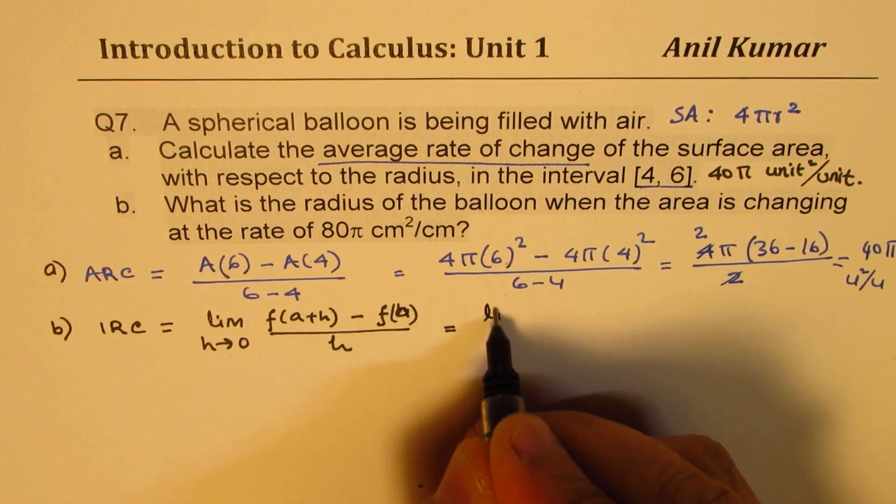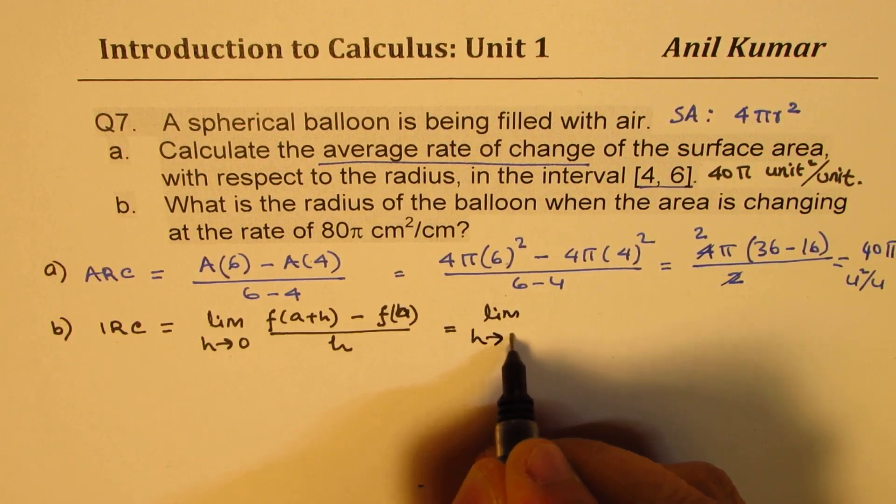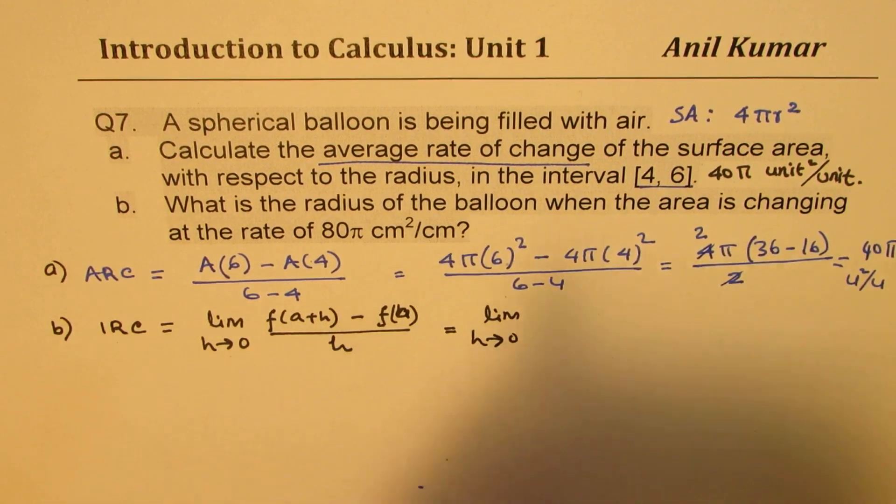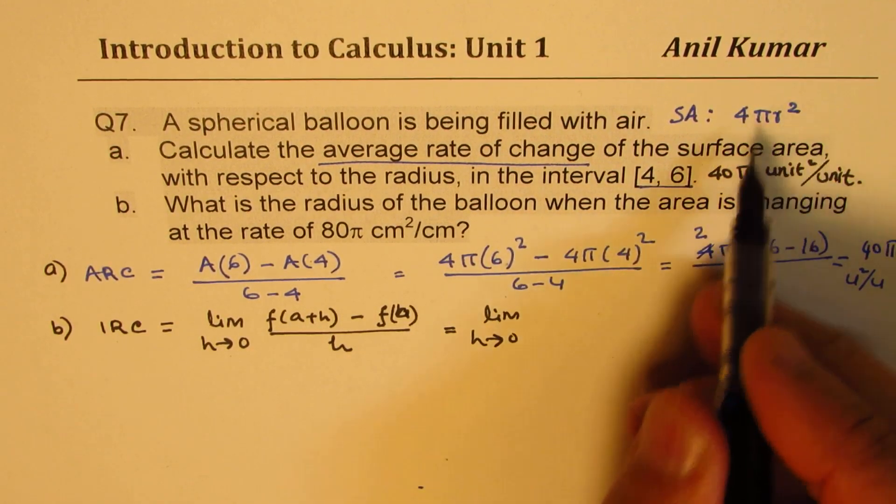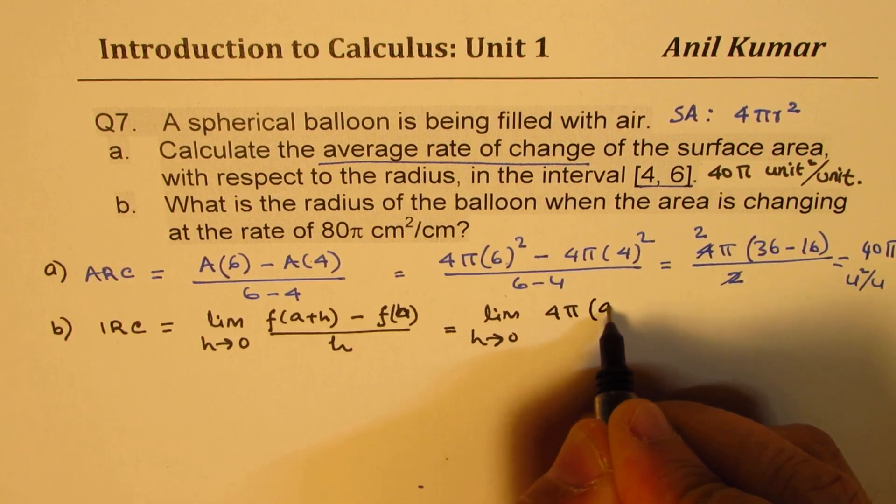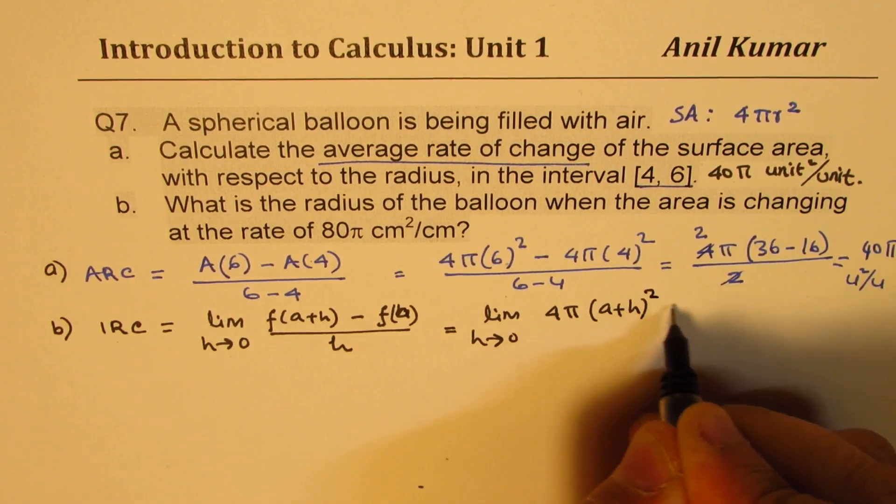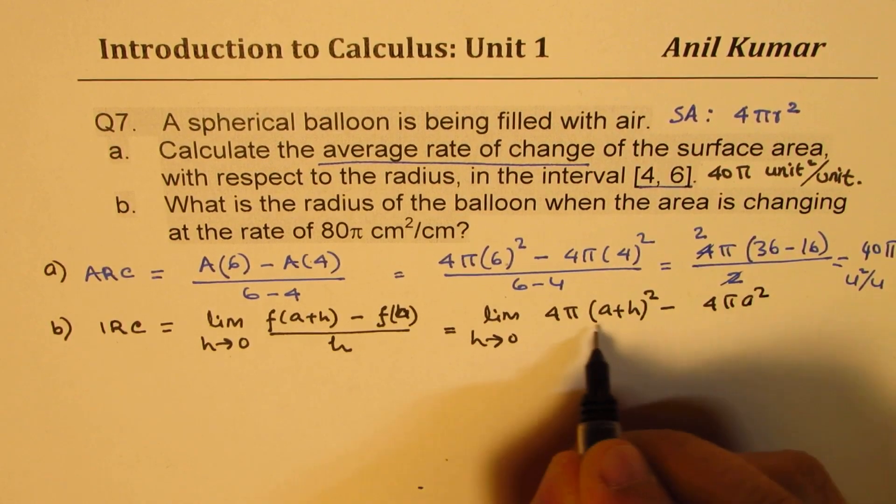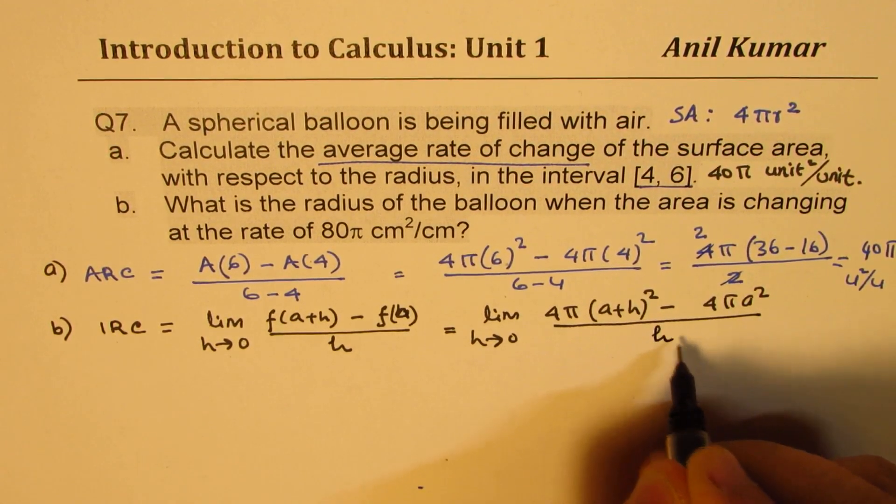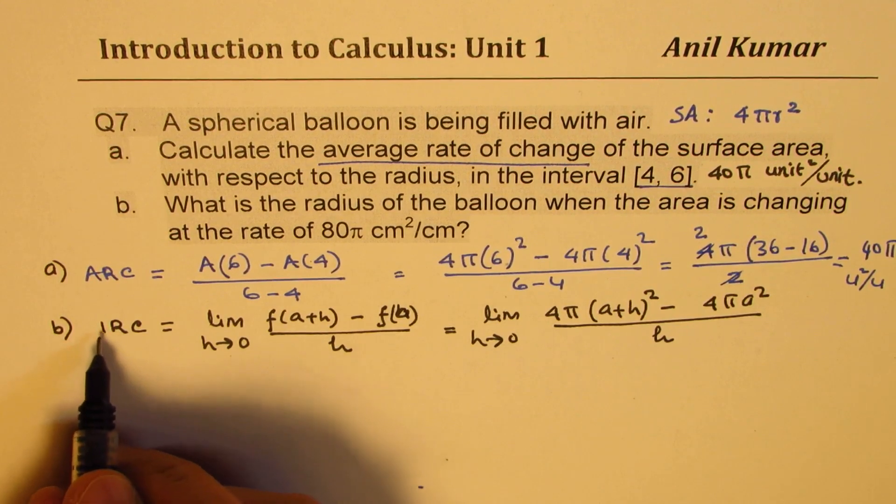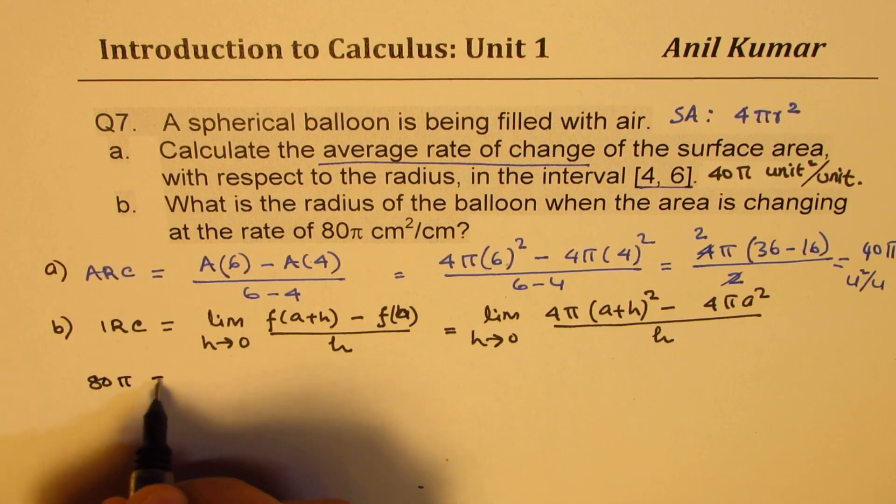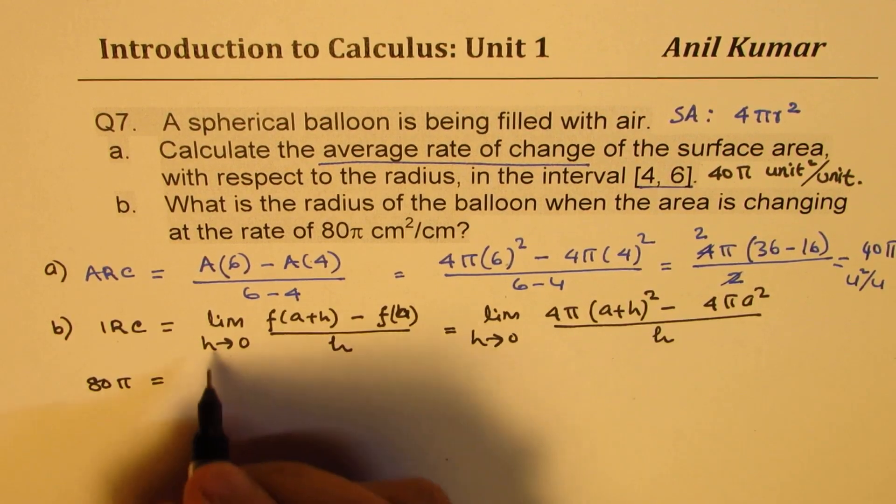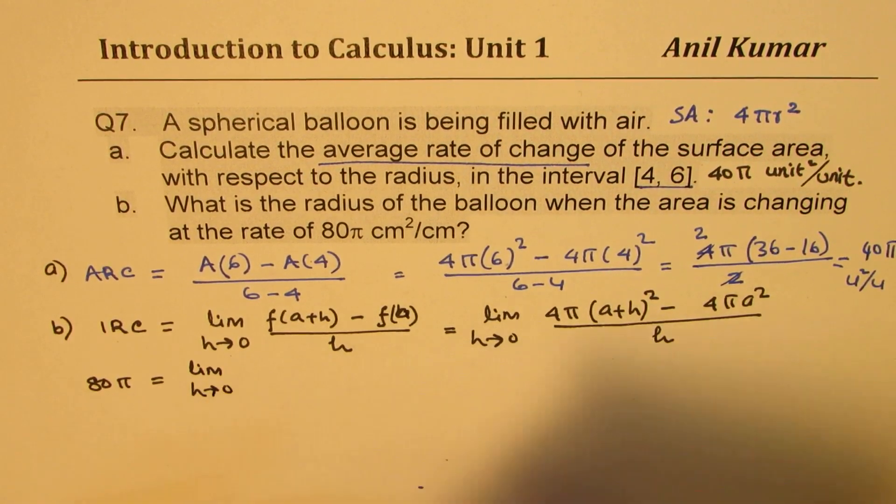So we know this is limit h approaches 0. So writing a+h for r, that is the variable, we get 4π(a+h)² minus 4πa² over h. That is what you get. So now we know instantaneous rate of change is 80π, so 80π should be equal to this limit, limit h approaches 0.